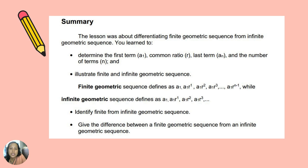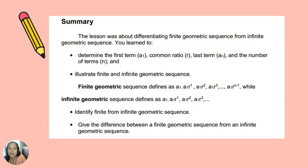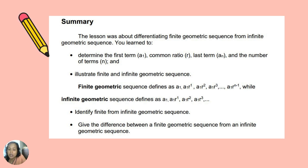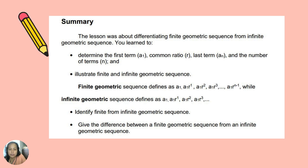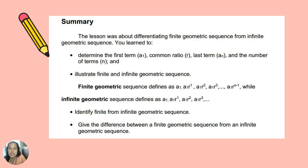To summarize this topic: the lesson was about differentiating finite geometric sequence from infinite geometric sequence. You learned how to determine the first term, the common ratio, the last term, and the number of terms, and how to illustrate finite and infinite geometric sequences. A finite geometric sequence has a first term, a common ratio, and a last term. An infinite geometric sequence has a first term and a common ratio but has no last term, with continuous terms denoted by three dots. Thank you everyone for listening to this lesson. God bless everyone.